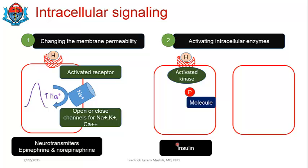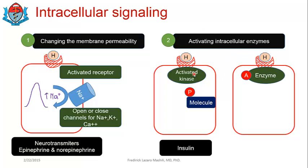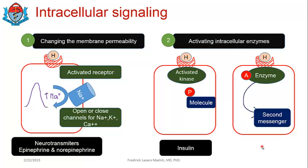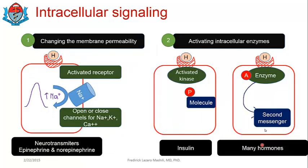The second type of activating intracellular enzymes is when the hormone-receptor complex activates an enzyme that is not a kinase. This enzyme activates another molecule known as a second messenger. We call it a second messenger because the hormone itself is the first messenger — the first messenger activates an enzyme that activates a second messenger, which then brings about a biological or cellular response. A lot of hormones act through this mechanism, so it is very important to understand.